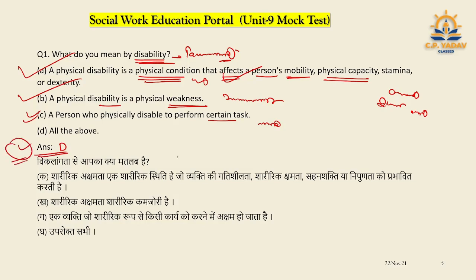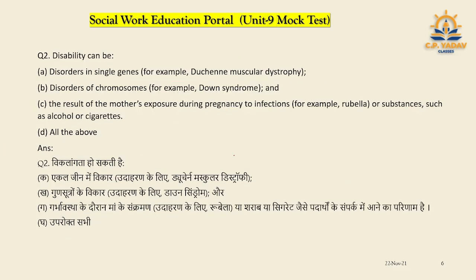Next question — you can see the answer to the last question. Question number two: Disability can be categorized in different ways. One option is a disorder of a single gene — meaning it can be genetic.